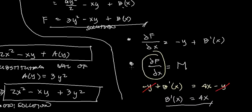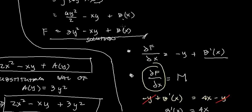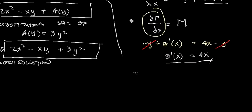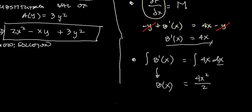And right after getting the value of our b'(x), we need b(x) only. So our next step is to get the integral of this, b'(x), which yields b(x). So b(x) is ∫4x dx, so we have 4x² divided by 2 equals 2x².